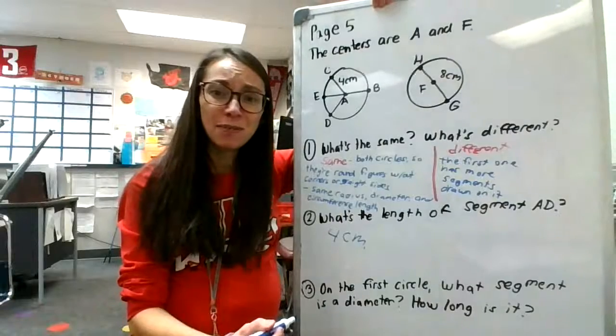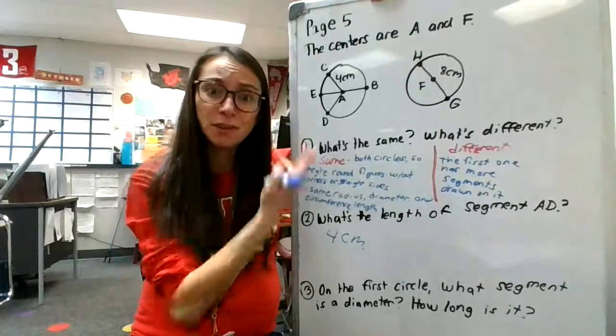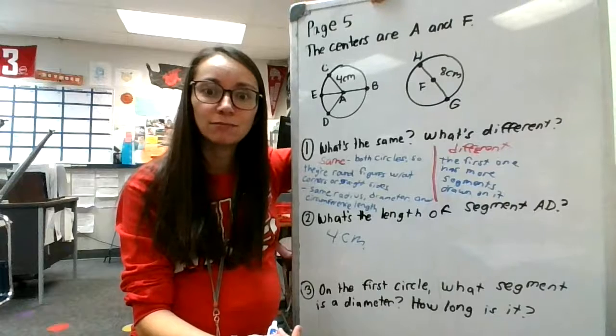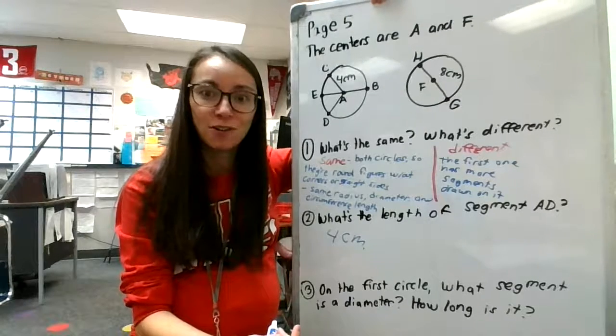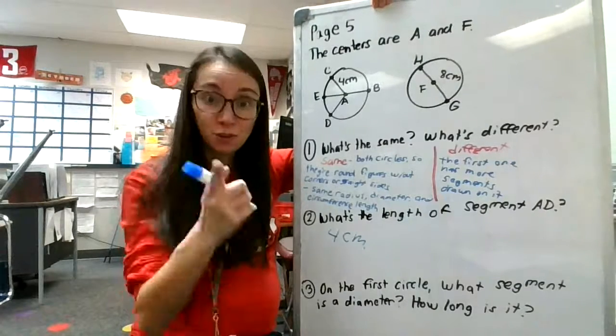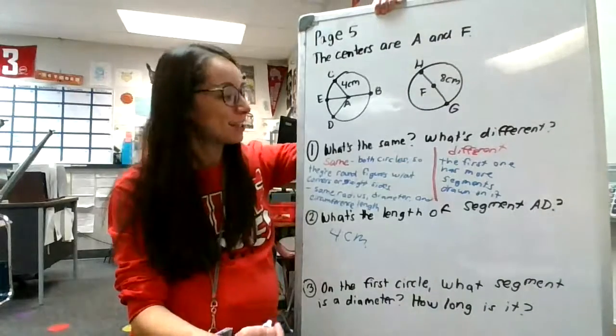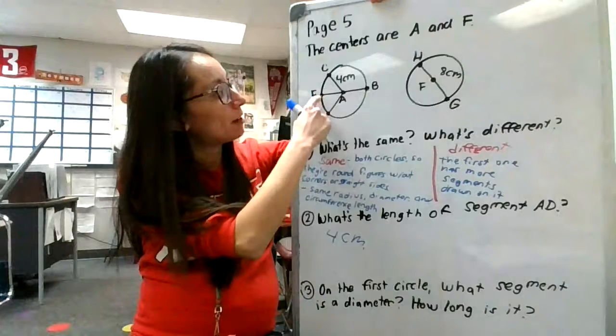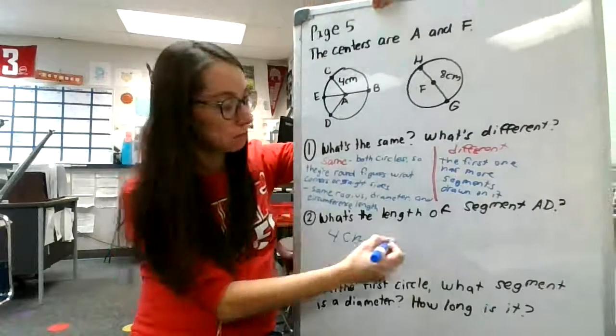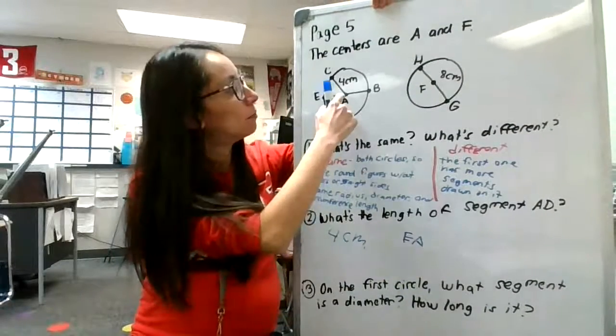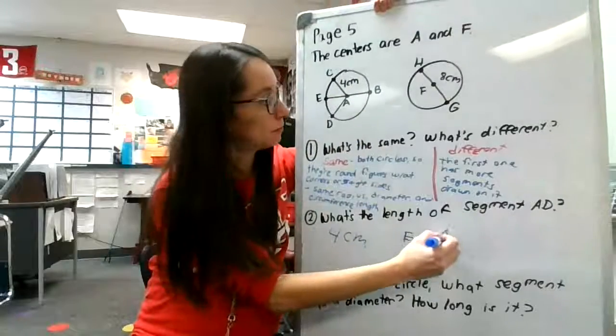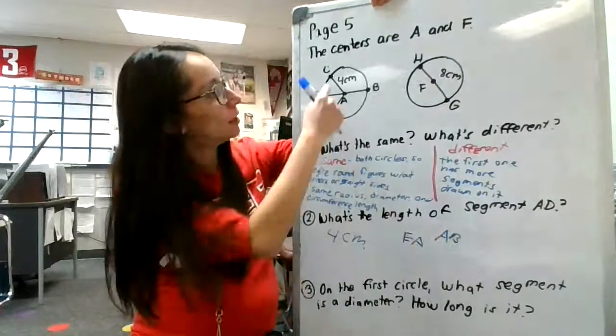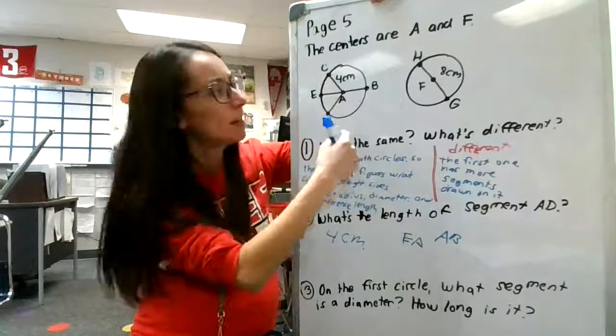Can you think of another segment that is also four centimeters? Write it down. Yes, write it down on your paper. Yes, you. Thanks. Some other segments that are also four centimeters. We got AD. We got EA. We got AB. We got CA because it's labeled.